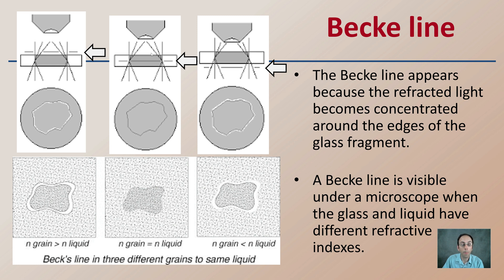In the middle image where they are both the same refractive index, the Beck lines merge and blur together and we don't really see the Beck line developing. However, where the liquid has a lower refractive index than the actual glass piece, we see a distinct halo.